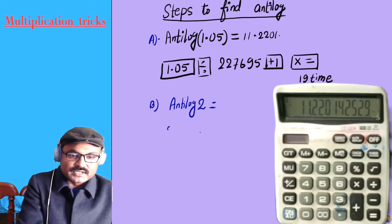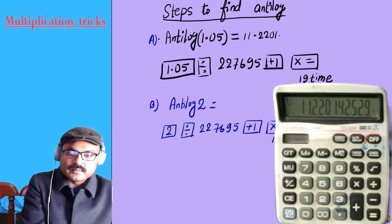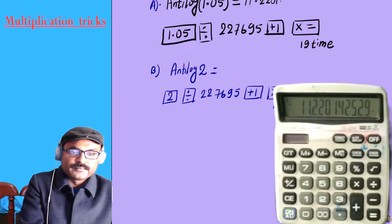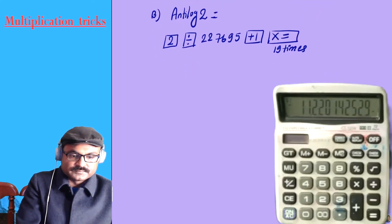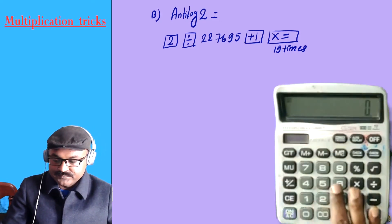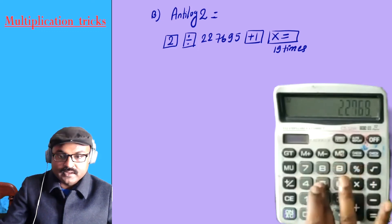Now log 2. The first thing is log 2 — this is a 100% approximation. We have 2 log calculation steps. First, press 2, divide by 2.27695, plus 1, and then press 'into equal to' 19 times.